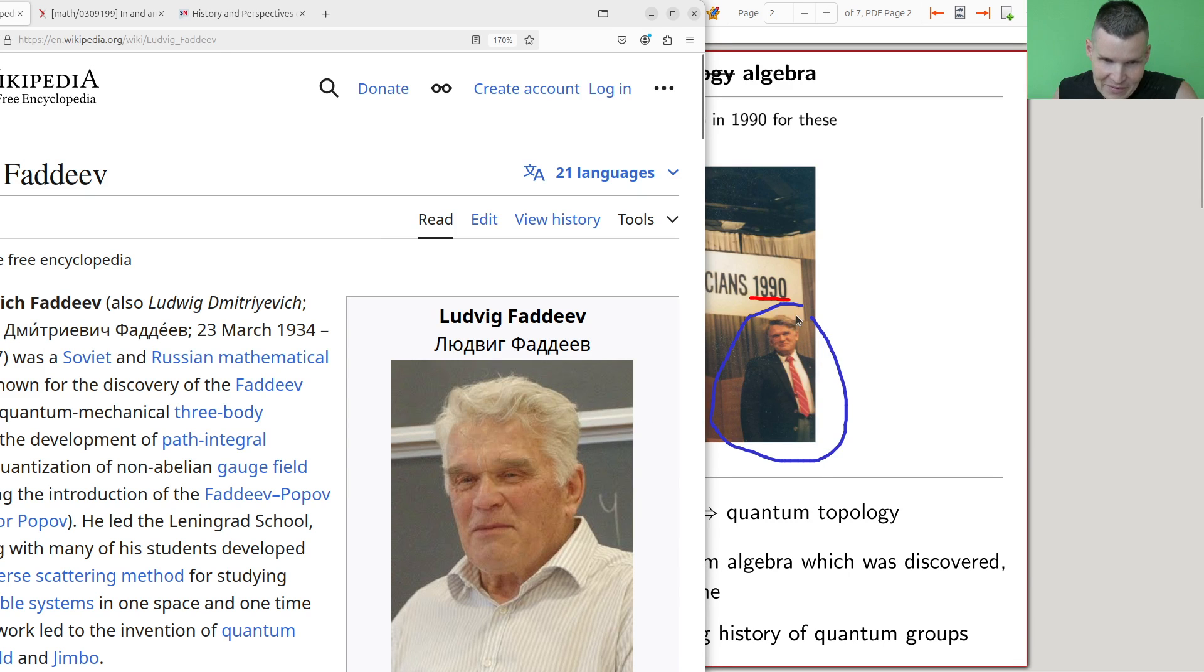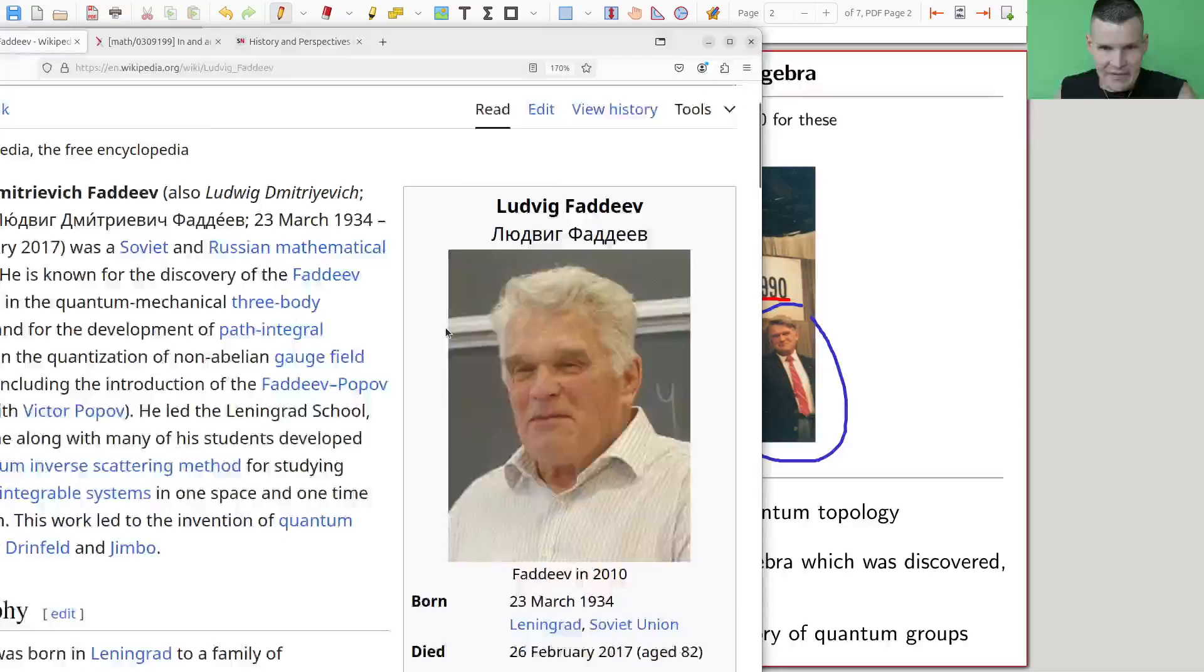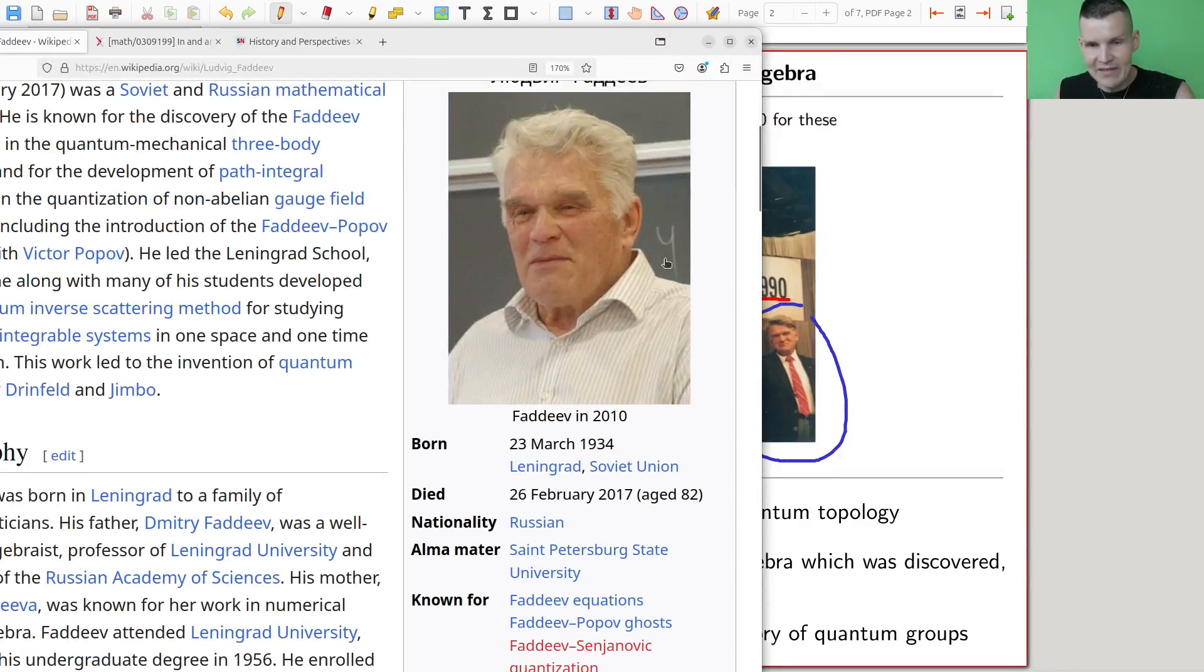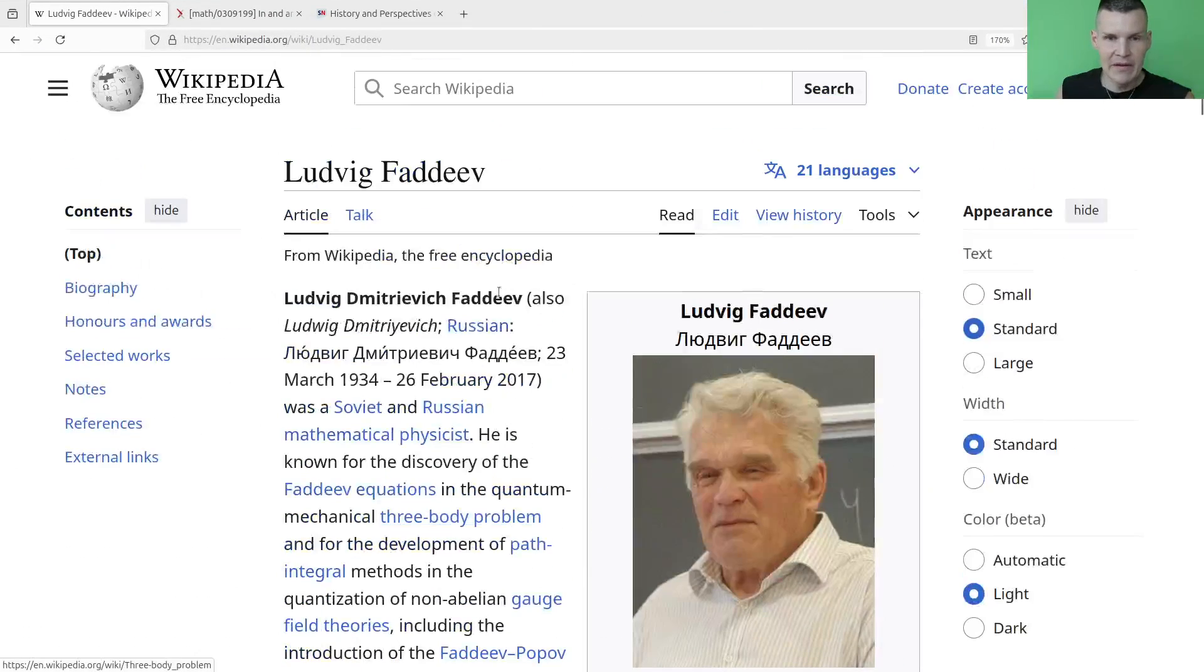Someone pointed out that this is actually Fadeyev. So let's compare. This picture here is from 1990 and this picture here is like 20 years later, and not bad for 20 years actually. So Fadeyev is a pretty famous mathematician or physicist or mathematical physicist from who had some really major breakthroughs in the 1980s and who you could call one of the pioneers of the study of quantum algebra.